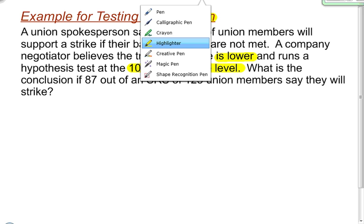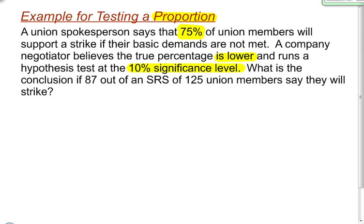I'm going to go ahead and write my null and alternative hypotheses for this particular problem. My null hypothesis is going to look like this: I know I'm using a proportion, so I'm going to use P for the population proportion, and my null hypothesis always has an equal sign in it. The value that I am testing is 75%, so I'm going to put 0.75 right there.